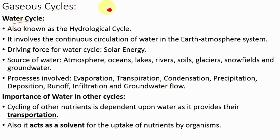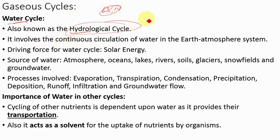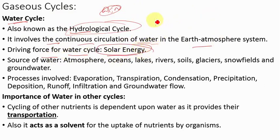The main gaseous cycles are the water cycle, carbon cycle, and nitrogen cycle, which we will cover in detail. You might already know about the water cycle, also known as the hydrological cycle, as it is the most basic cycle covered in secondary classes. The water cycle involves the continuous circulation of water in earth's atmosphere system. The driving force behind the water cycle is solar energy, because the first step — evaporation — takes place due to heat provided by the sun.